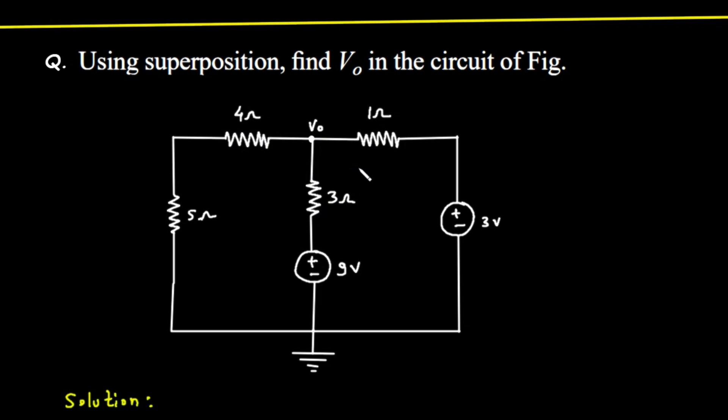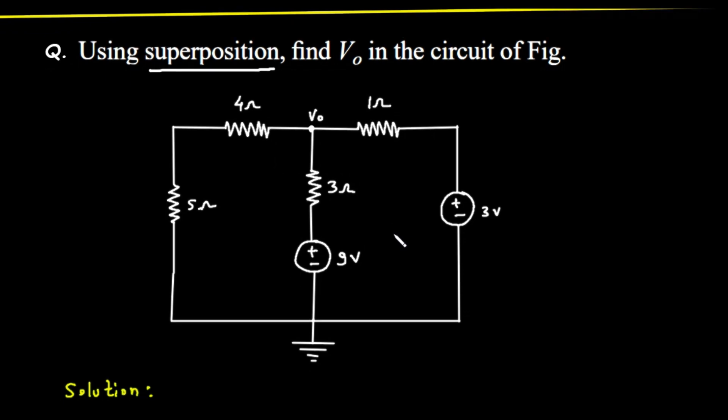The superposition theorem is a wonderfully simple idea. It says that in any linear circuit with multiple independent sources, like our two voltage sources, we can find the total effect by calculating the effect of each source one at a time, and then adding them all together. To consider each source one at a time, we have to turn off all the other sources. Here's how we do that. To turn off a voltage source, we replace it with a short circuit. A short circuit is just a plain wire with zero resistance. Think of it this way, a voltage source provides a voltage difference. A zero-volt source provides no voltage difference, which is exactly what a perfect wire does.